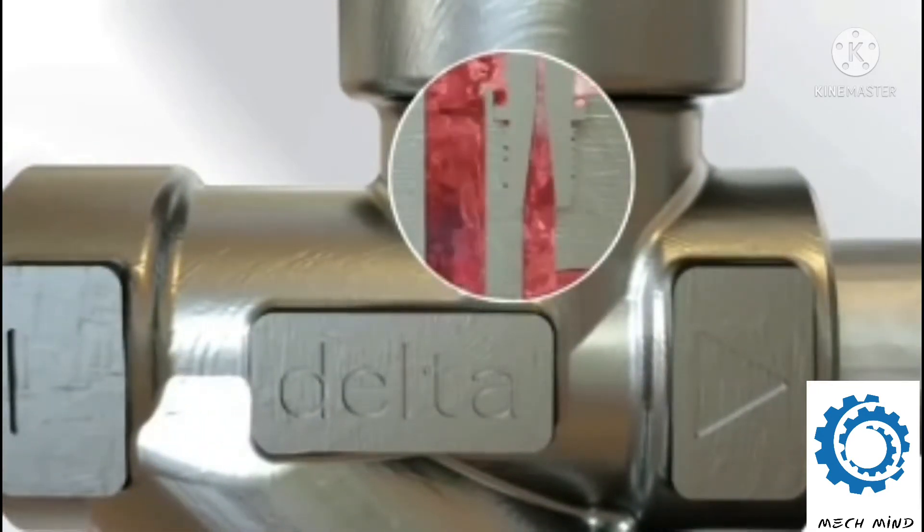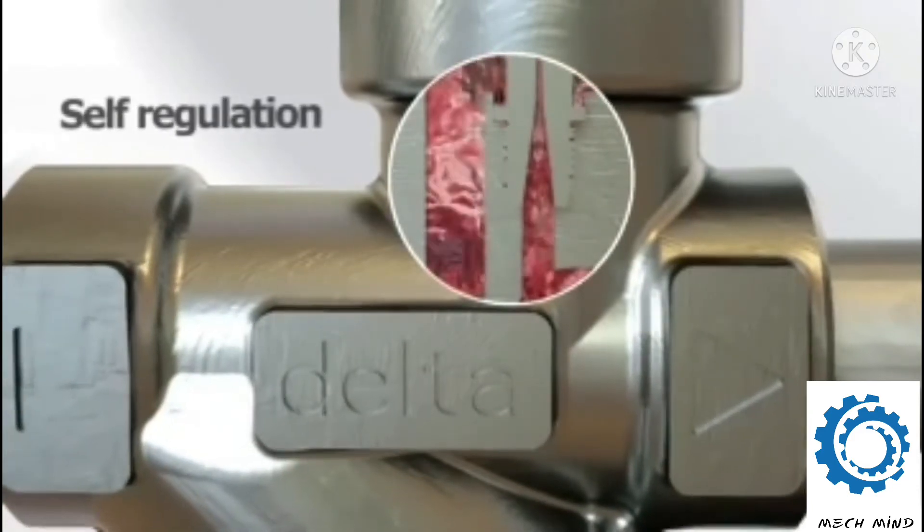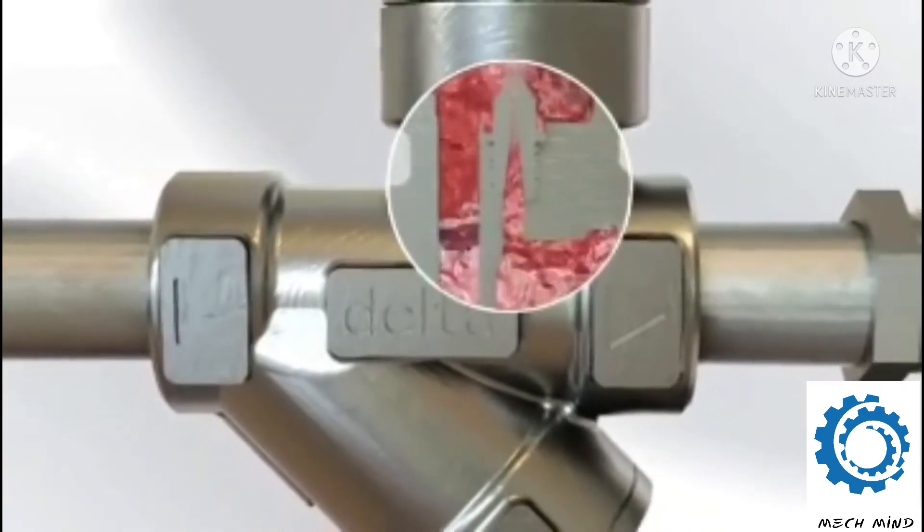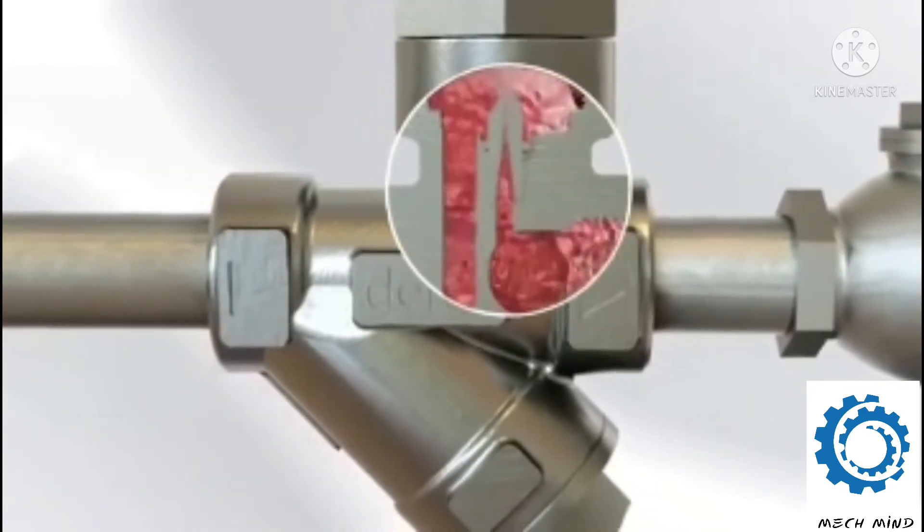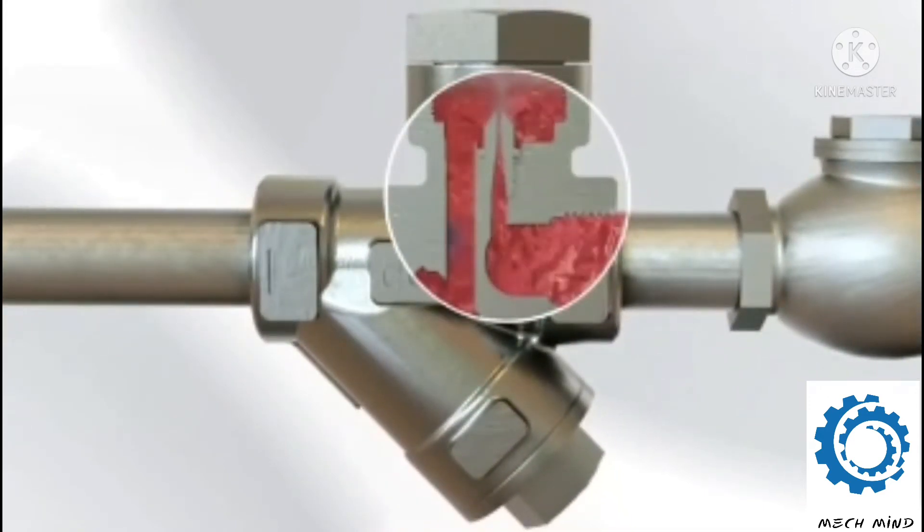This varying of back pressure at the mouth of the venturi allows the delta steam trap to self-regulate the condensate flow as the condensate load changes. As the pressure or load in the steam system rises or falls, the back pressure that is constantly changing at the mouth of the venturi also rises or falls.